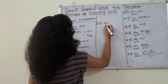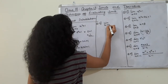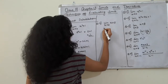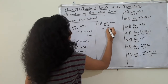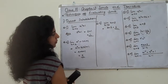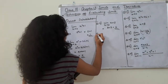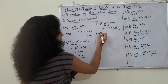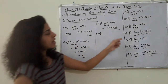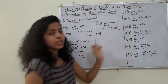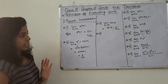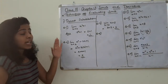Next: limit as x tends to 3 of x plus 3. Substituting x = 3: 3 plus 3 equals 6. We put in the value and solve the question directly.